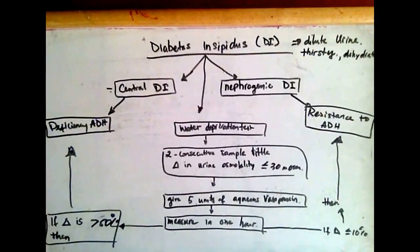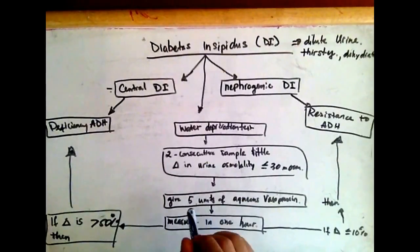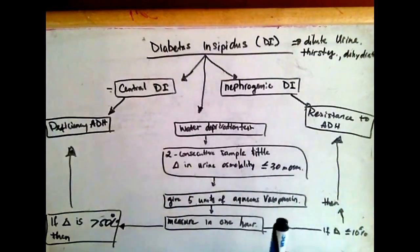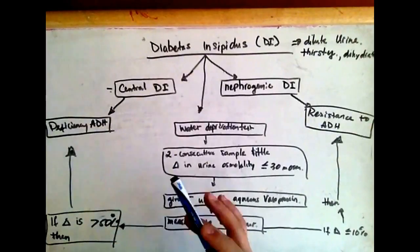If there's a change of less than 10%, then we would conclude that it is nephrogenic diabetes insipidus, which is due to the resistance of ADH in the kidney by the receptors, and not central diabetes insipidus.